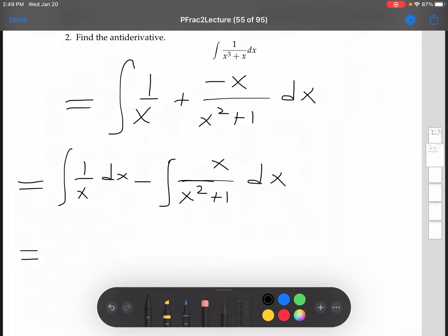All right, this first integral here, this is the antiderivative of 1 over x is ln absolute value x, and then minus, and then we'll have whatever we get for this integral here.